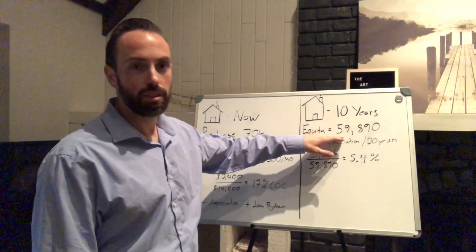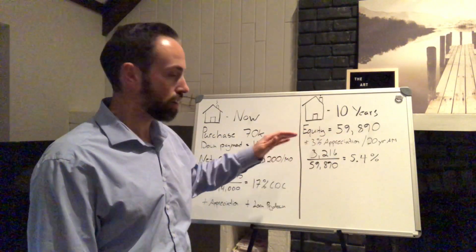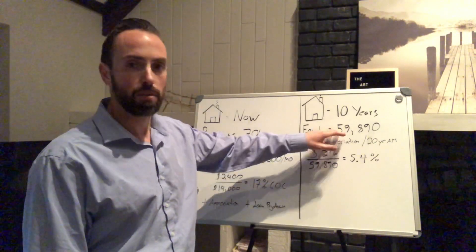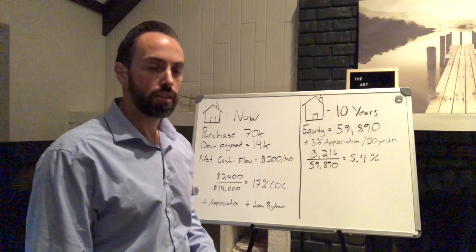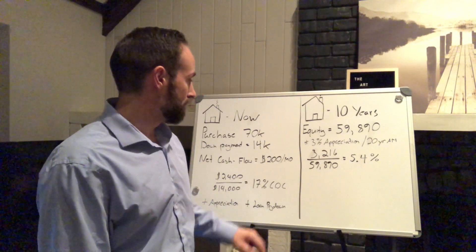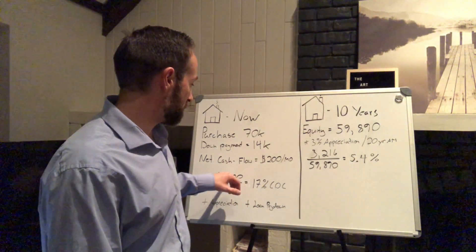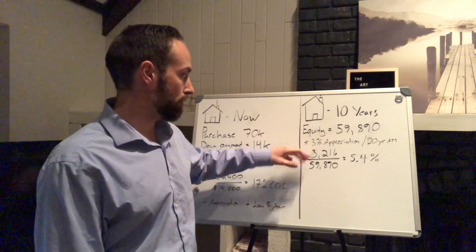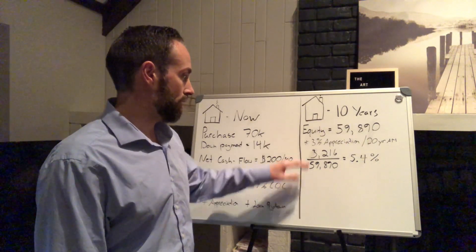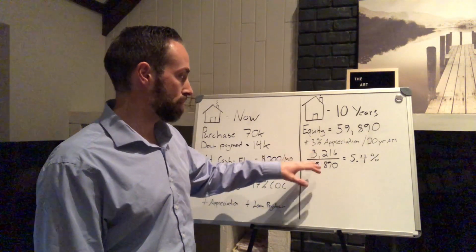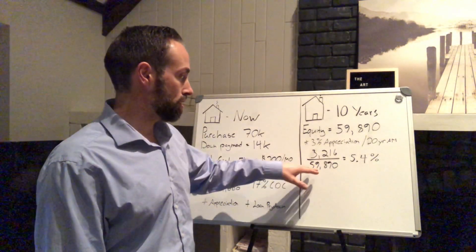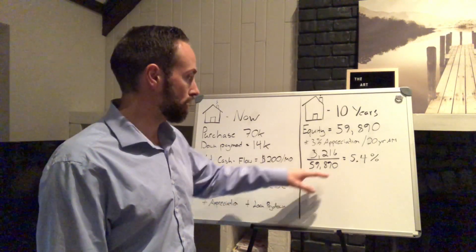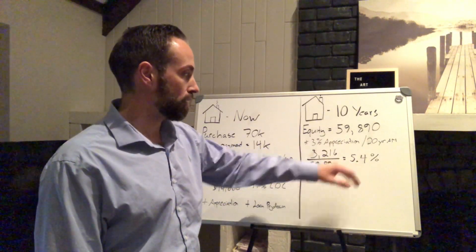Now after holding it for 10 years, your equity is almost $60,000. That's a combination of loan pay-down and 3% appreciation — so you've got a big chunk of money sitting in that house that's really just dead money. Assuming 3% appreciation on the rent as well, your new annual cash flow from that house is $3,216, and that is divided by the roughly $59,000 of equity you now have in that property.